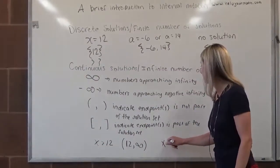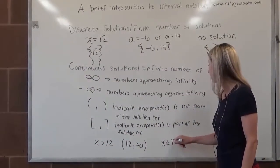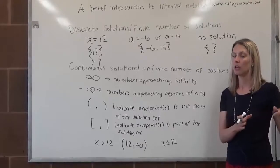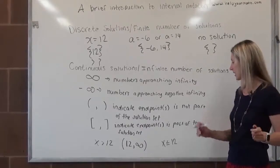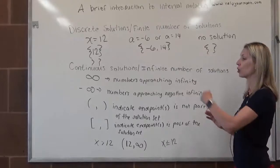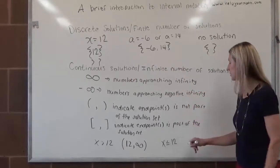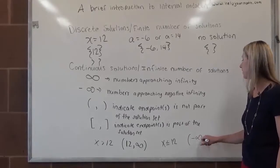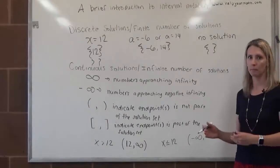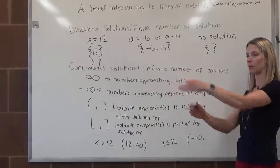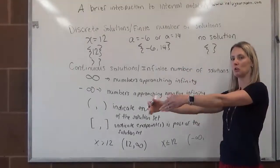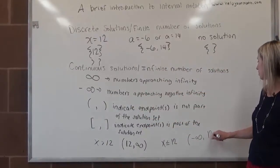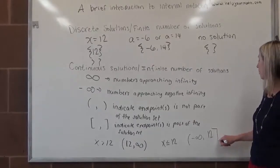On the flip side, if we had x is less than or equal to 12, we're talking about numbers that are 12 or less: 11, 0, negative 37, et cetera. Because there's no smallest number, we would start this interval at negative infinity. Anytime you use infinity or negative infinity, it must be a parenthesis because those are not real numbers. They're just a way to indicate that real numbers keep going in one direction. So we would say negative infinity, and then the biggest number in the solution set is 12, which we include, so we put a bracket there.